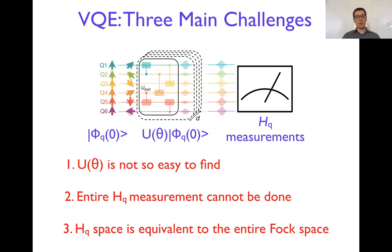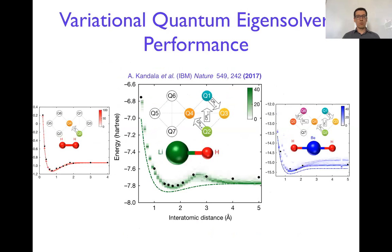Also, I would like to show the early days kind of implementation of the variational quantum eigensolver and actual hardware, which was done by the IBM group in 2017. So there are these three molecules, hydrogen, lithium-H and helium-H2.